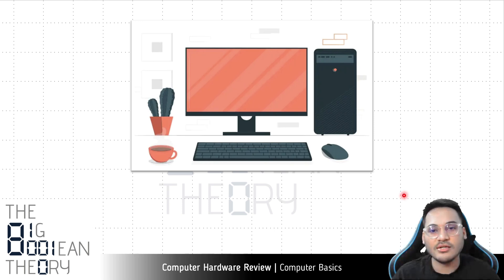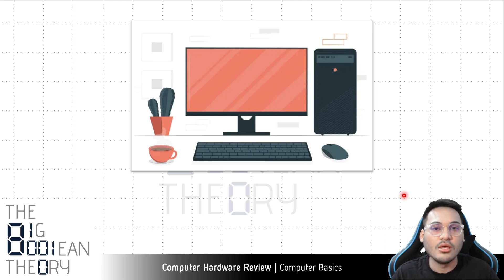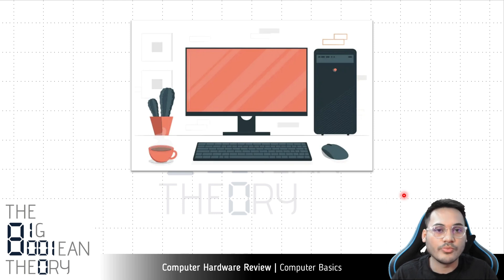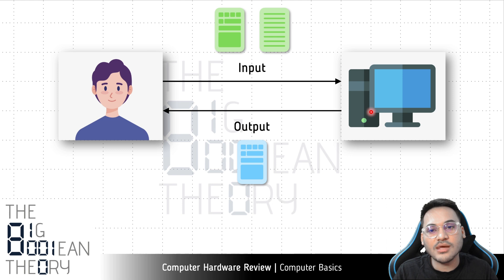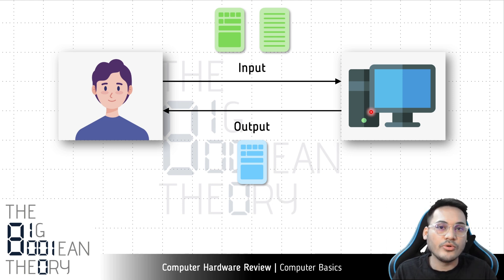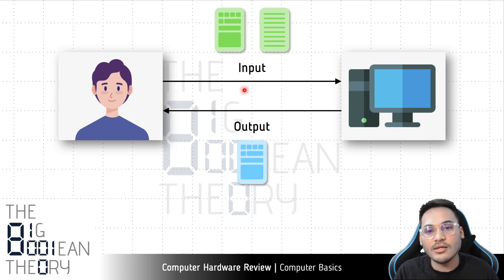I'm assuming everyone here has used a computer at some point. If you're watching this on a PC, laptop, or mobile, you're using a computer. So the basic question is: what is a computer? This diagram explains in brief what a computer does. The user gives some input, the computer takes that input, does some processing to produce an output, and that output is returned to the user.